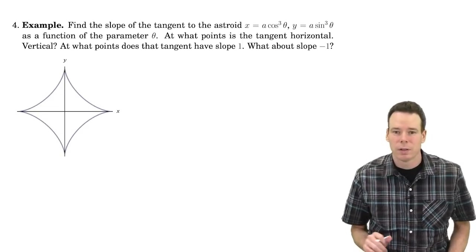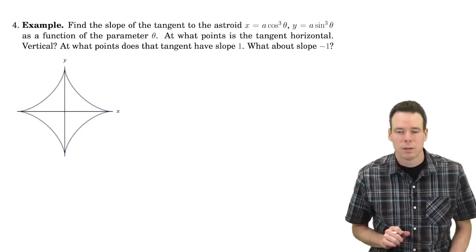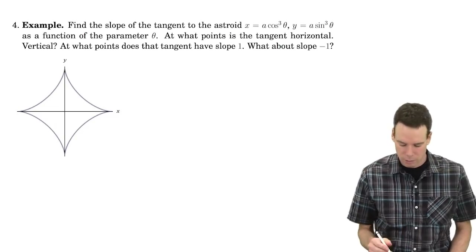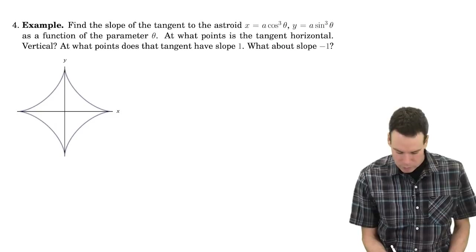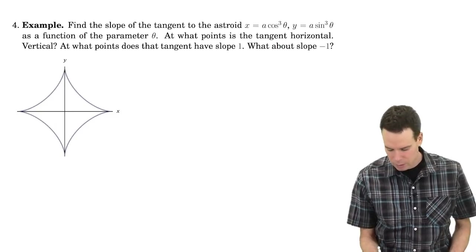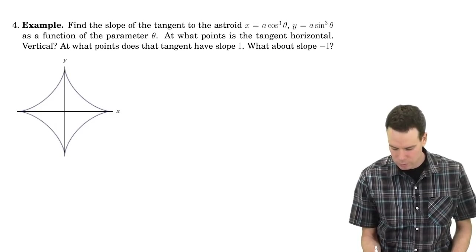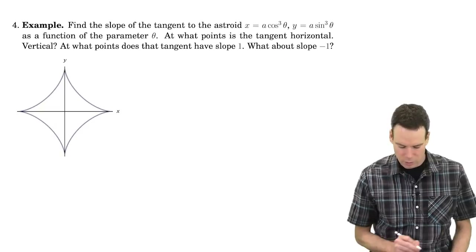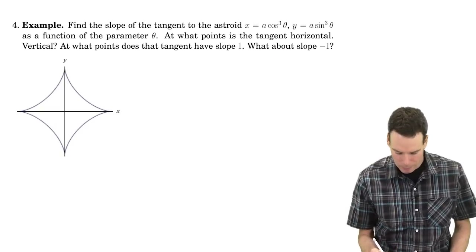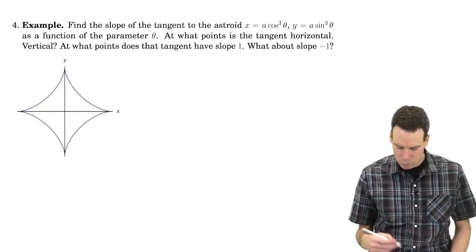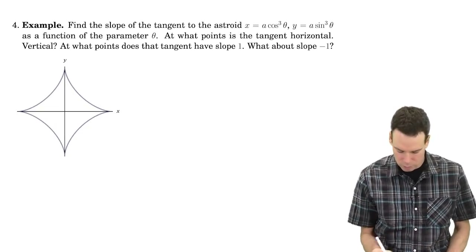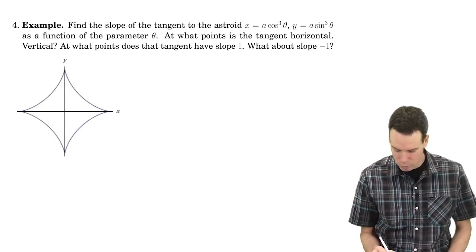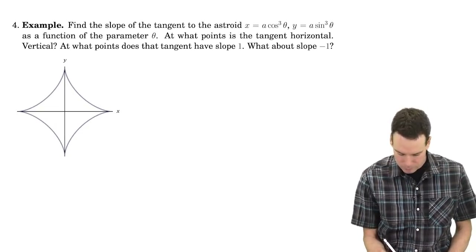In this first example we're going to look at finding tangent lines, slopes of tangent lines, and tangent lines with prescribed slopes. We'll find the slope of the tangent to the asteroid x equals a cos cubed of theta, y equals a sine cubed of theta as a function of the parameter theta. Then we'll figure out at what points the tangent line is horizontal and vertical, and what points have tangent line slope 1 and slope negative 1.